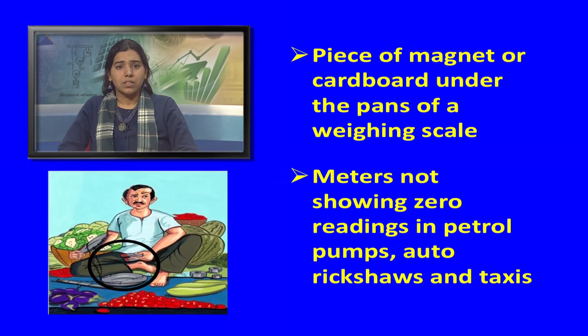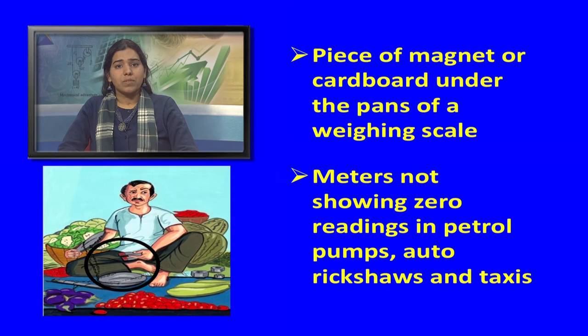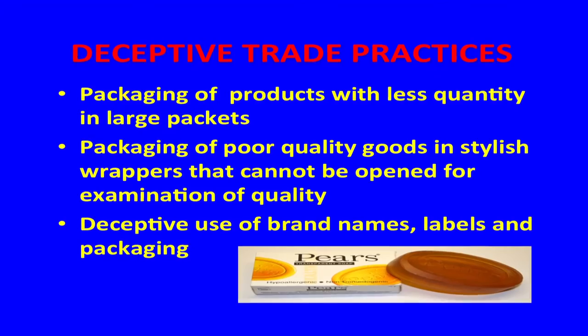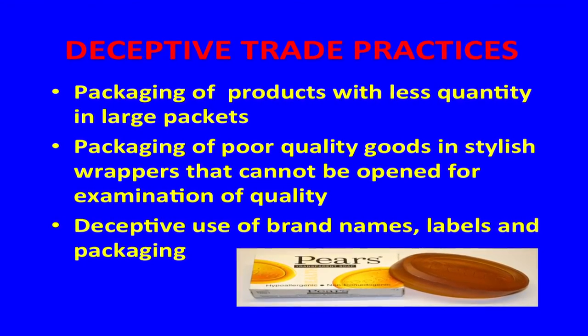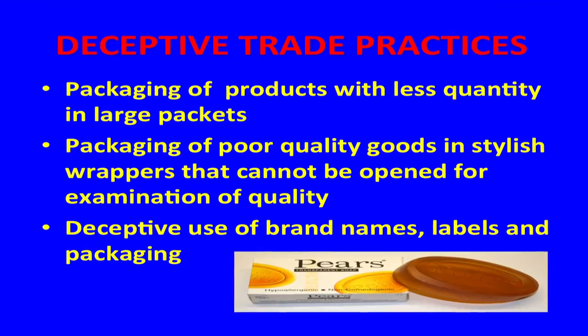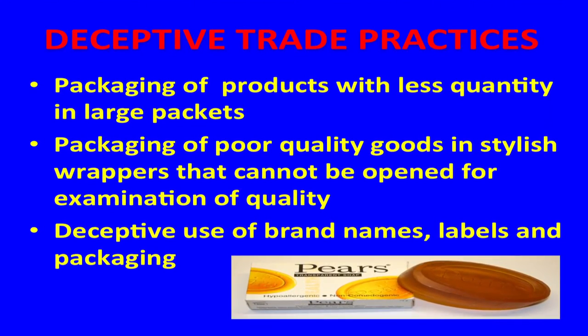Other examples include meters not showing zero reading in petrol pumps, auto-rickshaws, and taxis; use of dented or false-bottom measures; and packaging of products with less quantity in large packets. Packaging of poor quality goods in stylish wrappers that cannot be opened for examination of quality is also a common deceptive practice.